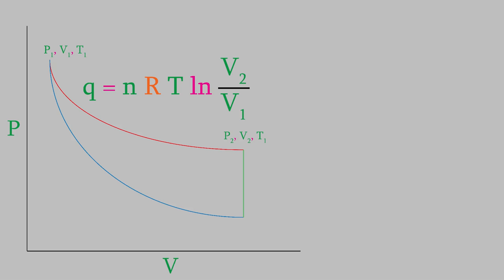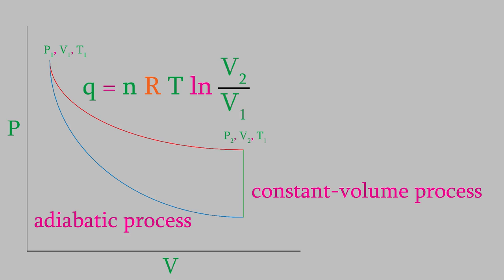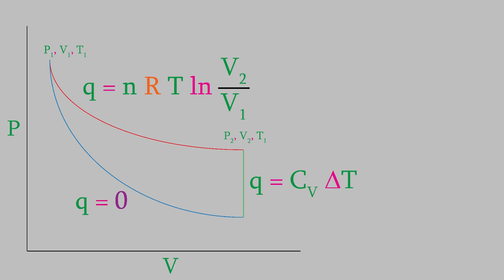However, when we get from the initial to the final state via an adiabatic path followed by a constant volume path, the overall heat change was CV delta T. So heat is a path function. It matters how we got from the initial to the final state.